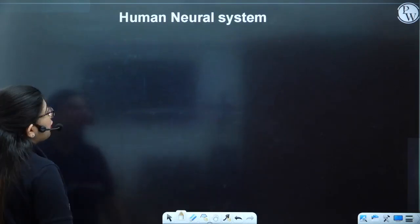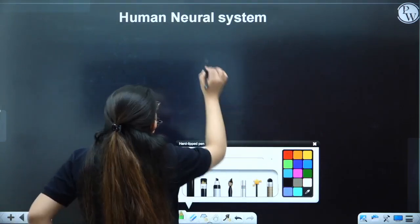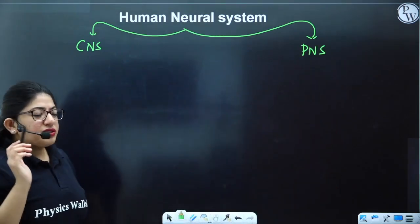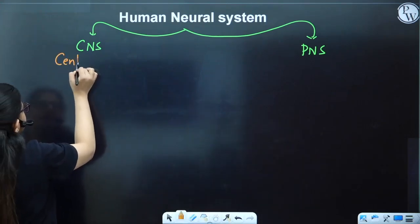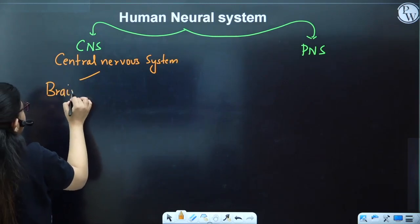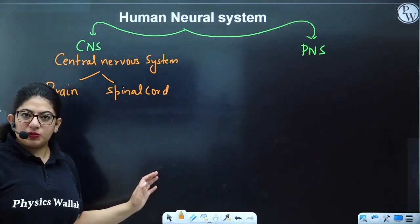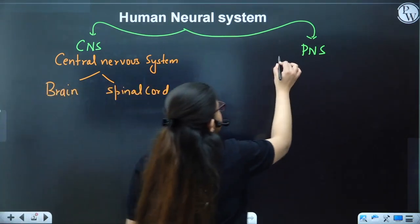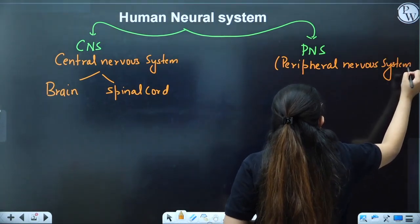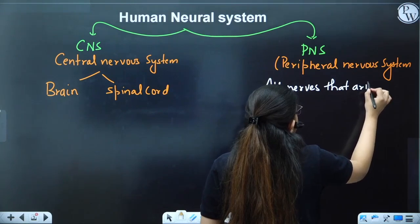Let's talk about human physiology. The human nervous system comprises two parts: one is your Central Nervous System (CNS) and another is your Peripheral Nervous System (PNS). The CNS comprises two important body organs — the brain and spinal cord. Whatever nerves come out from the brain and spinal cord comprise the Peripheral Nervous System. The PNS contains all the nerves that arise from the CNS.